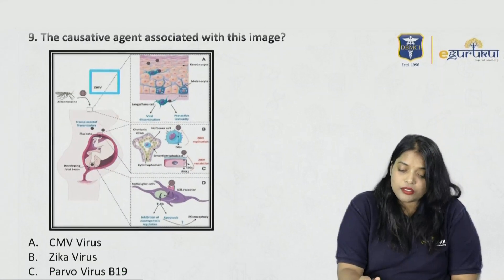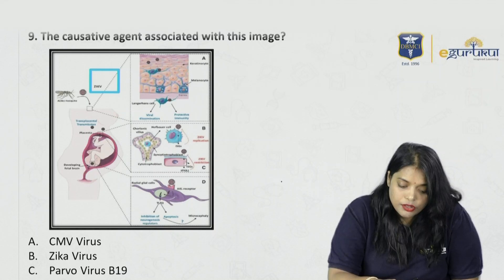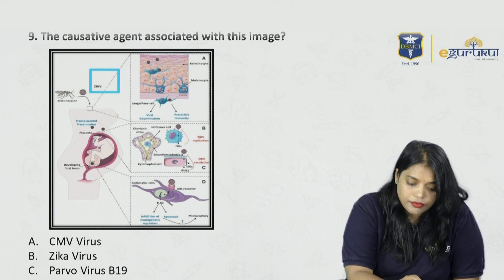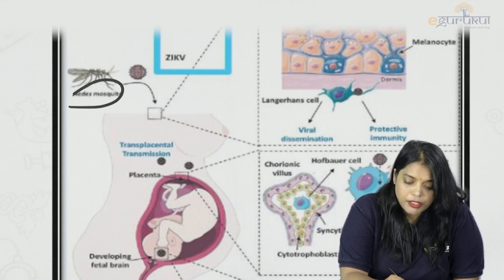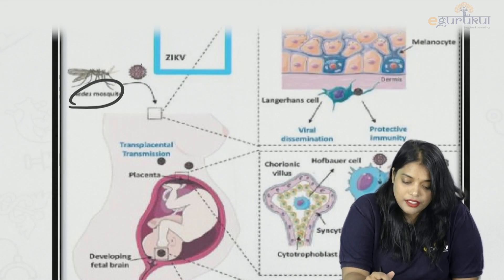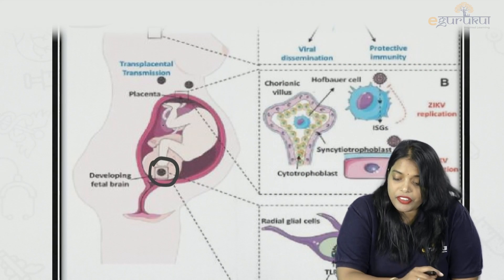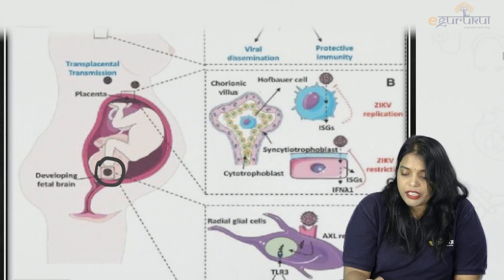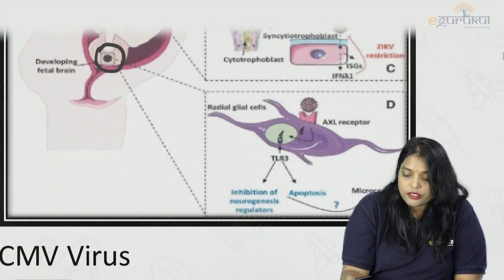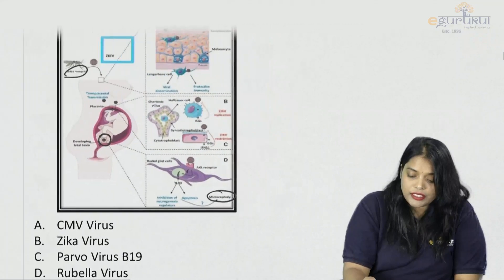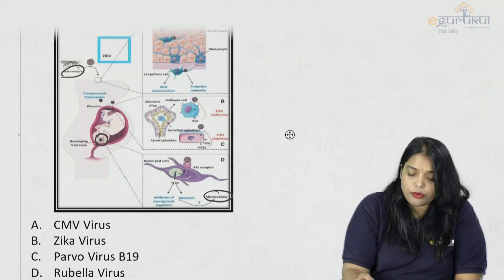The causative agent associated with this image: you can see an Aedes mosquito transmitting a virus. The virus is undergoing transplacental transmission and mainly affecting the developing fetal brain. Which virus affects the fetal brain and causes microcephaly? Is it cytomegalovirus, Zika virus, parvovirus, or rubella virus?